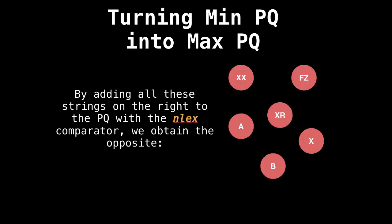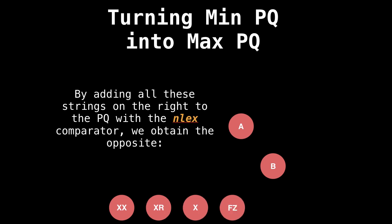So now let's do the same thing, but with nlex. And we should hopefully obtain the opposite sequence in reverse order. And then we get xx, xr, x, f, z, b, and a. So it did exactly what we intended it to do.